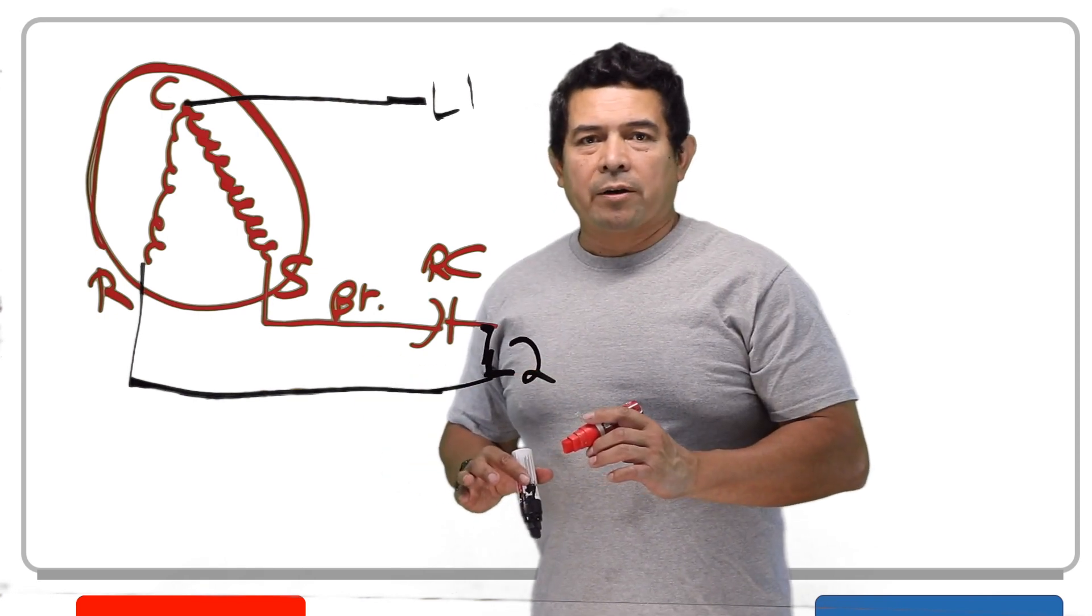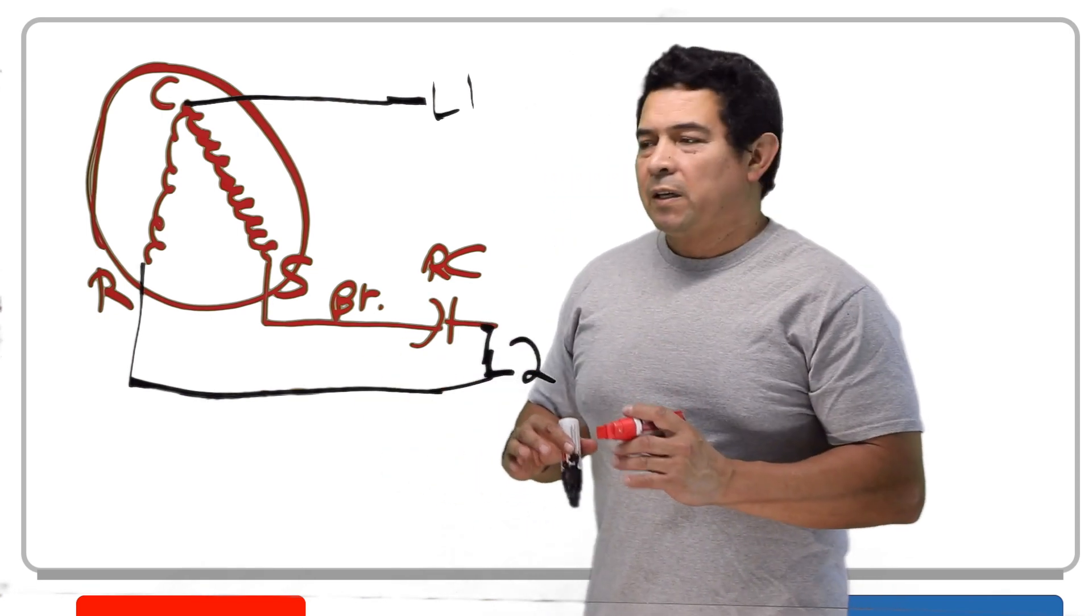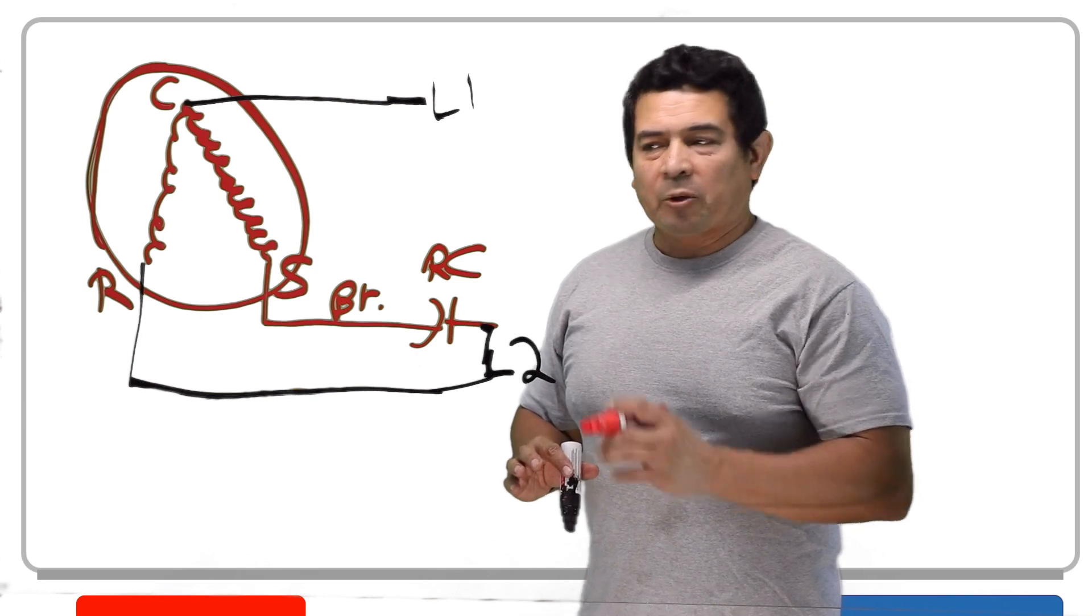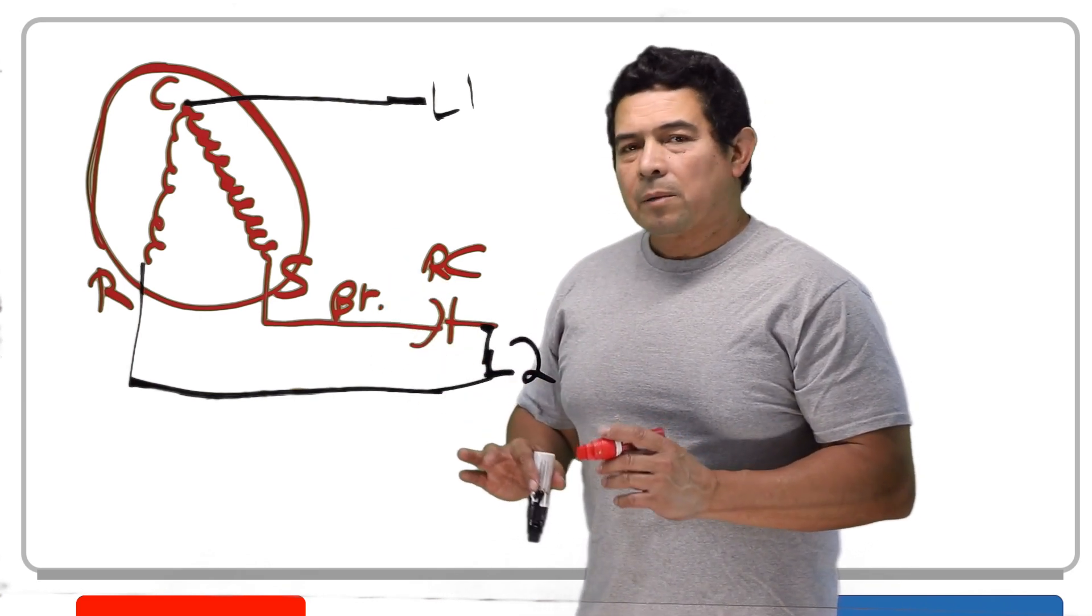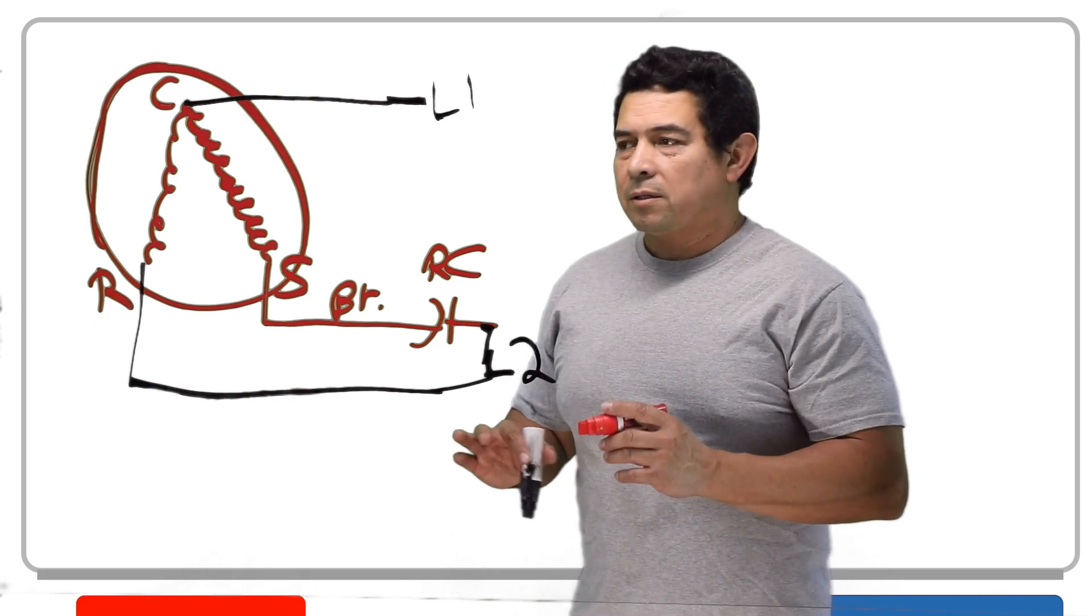One thing I was saying that you should remember is the same line that feeds the run winding feeds the capacitor, and the capacitor always feeds my start winding. This is how they always go wired. If you wire it up another way, it's just going to mess things up. But now, since we know how this goes wired, let's talk about what it does.